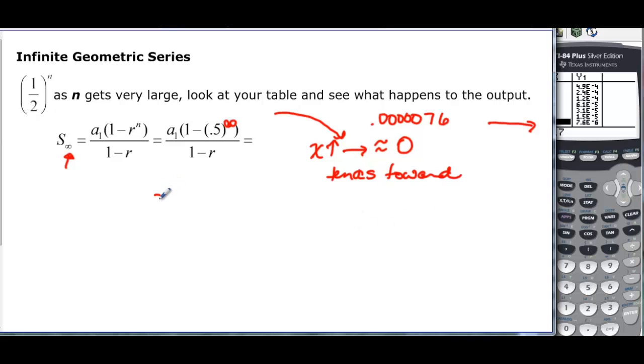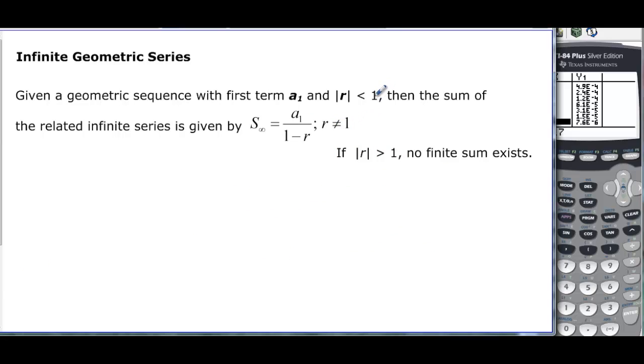So this would actually be, then, a sub 1 times 1 minus 0 over 1 minus r. Well, what's 1 minus 0? It's just 1. So we can say that summing up the infinite series is just going to be a sub 1 over 1 minus r. We have now found this nice little formula for infinite series. As long as r isn't 1, it has to be less than 1. And if r is greater than 1, then we don't actually have an infinite sum.